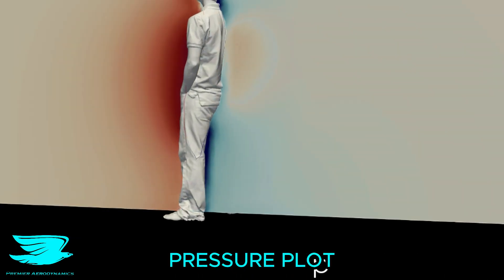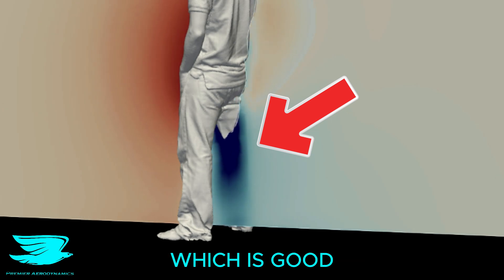That is because the air gets funneled through them, and we can see in this pressure plot that it corresponds to a low pressure here, which is good for downforce production.